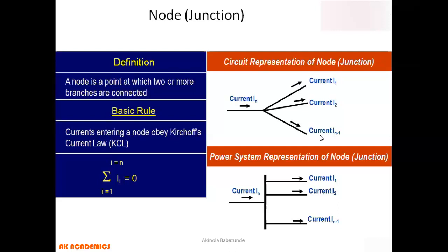For those focusing on power systems, the power system representation of a node uses a bus bar rather than just a point. On that bar, you can see current i1 originating from that bar, i2, and so on, up to the last current, with the incoming current i_n going into that particular bar.